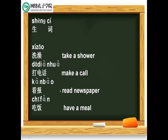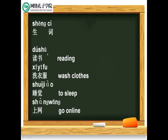The last one: 吃饭，have a meal. 他在吃饭。He is having a meal. 他在读书，reading. 读书。He is reading. 洗衣服，wash clothes. 他在洗衣服。He is washing clothes. 睡觉，to sleep. 他在睡觉。He is sleeping. 上网，go online. 他在上网。He is going online. Perfect.